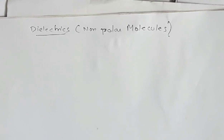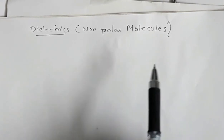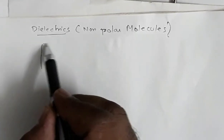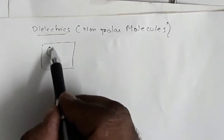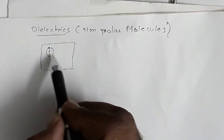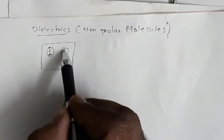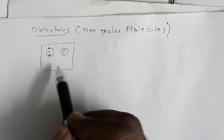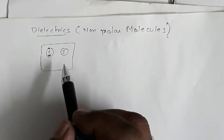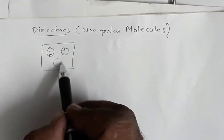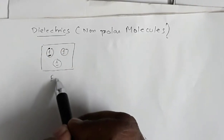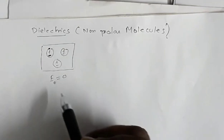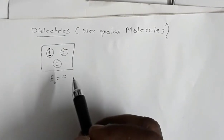Let us see the behavior of dielectrics with non-polar molecules. Suppose this is a dielectric with non-polar molecules, meaning the positive and negative charges are concentrated at the same location. This is in the absence of an electric field — external electric field E₀ equals zero.